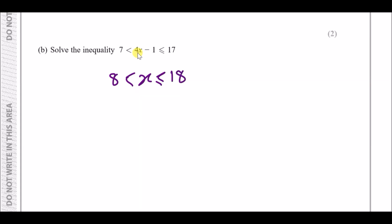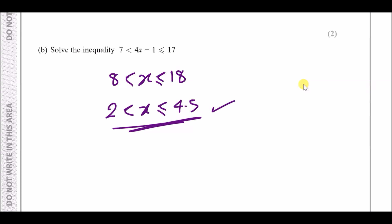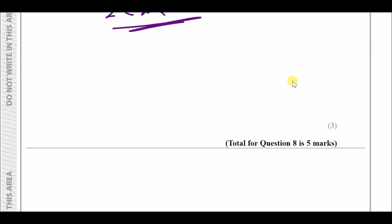Add 1 across to both sides to get 8 and 18. Then divide everything by 4: 8 over 4 is 2, and 18 over 4 is 4.5. So the solution is 2 < x < 4.5. You can leave it as a fraction, but this form is clearest for an inequality.